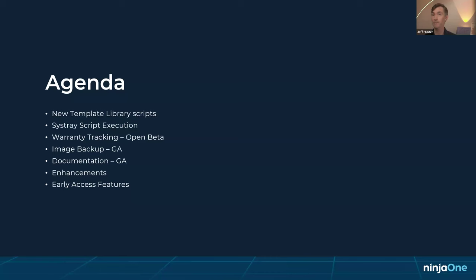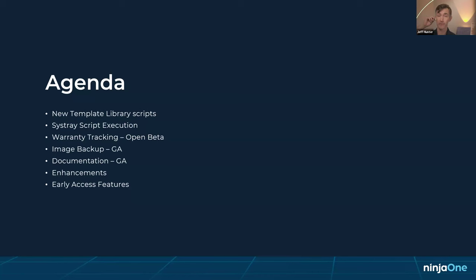NinjaOne documentation has been available for some time, but we can now say it is officially a launched feature, with parity to other documentation platforms. It gives you the ability to store institutional knowledge tied to your IT team or clientele inside the same platform where you're already managing endpoints. It includes checklists to keep everyone on track, a knowledge base accessible to technicians, and public links shareable with end users.